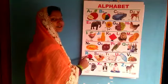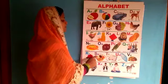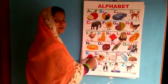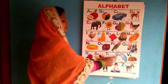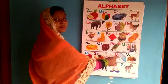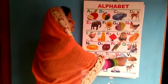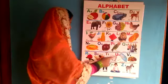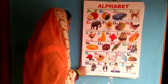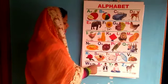R for rose, S for sweet, T for telephone, U for umbrella, V for vegetable, W for watch.